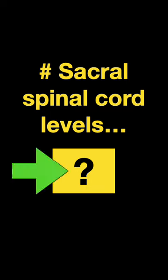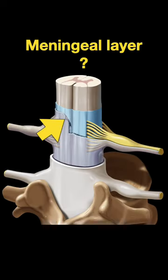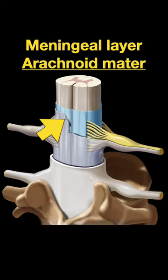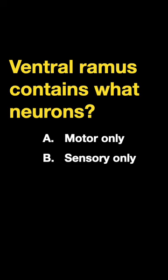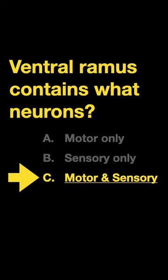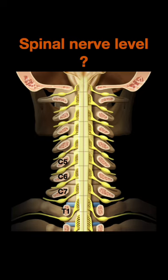And how many sacral spinal cord levels are there? Five. And what meningeal layer is shown there? That's the arachnoid mater. And the ventral ramus contains what neurons — motor, sensory, or motor and sensory? The answer: motor and sensory neurons.